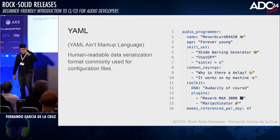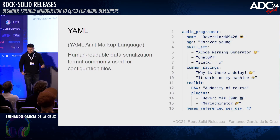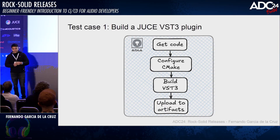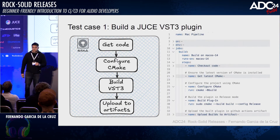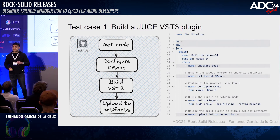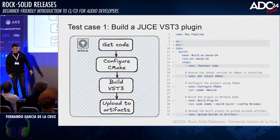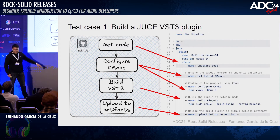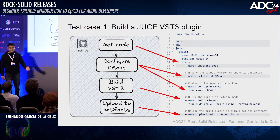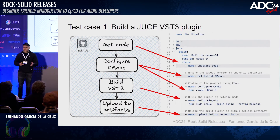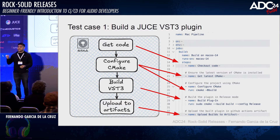We configure this using YAML — YAML Ain't Markup Language — which is a human-readable configuration file format. You define some parameters. This is the first case for our plugin, and its YAML configuration would look something like this. At the top you define the runner. Every little box has its own configuration part in YAML. You configure CMake, run the commands to configure it, build the plugin, run those commands, and upload to Artifacts — the storage you can use from GitHub Actions to store the built version of your plugin.